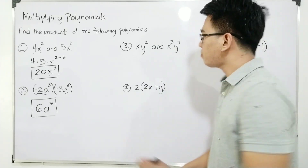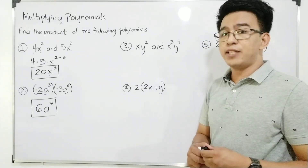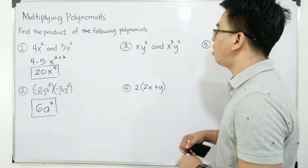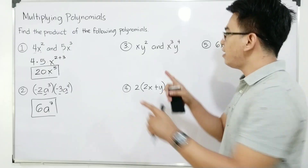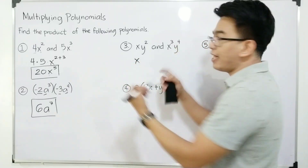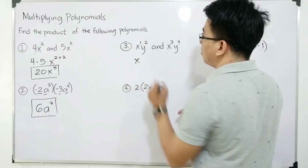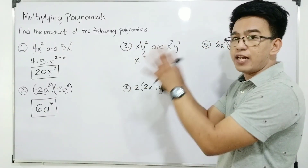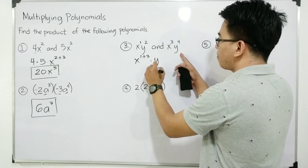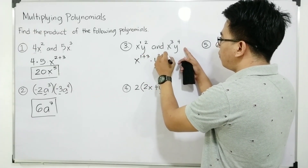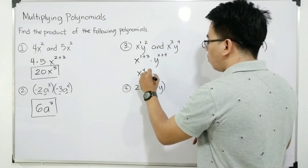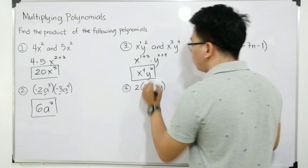Now let's move on with item number 3. We are given xy squared and x cubed y to the 4th power. So how do we multiply these two monomials if we have two different variables? First, locate which variables are the same. We have x and x — so copy your x and add their exponents. The exponent of this x is an invisible 1, so we have 1 plus 3. The second variable is y — add their exponents: 2 plus 4. Simplify: this gives us x raised to the 4th power, y raised to 6. And this is the answer for item number 3.